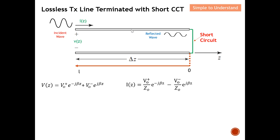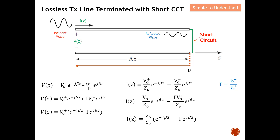Before we discuss the special case of a transmission line terminated with a short circuit, let's do a very quick revisit of the two sets of equations I derived in my earlier discussion on transmission line theory. If you are not able to understand how I obtained these two sets of equations, please see my previous video under the description. I have also derived the reflection coefficient, which equals V-o-minus over V-o-plus.